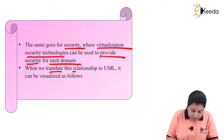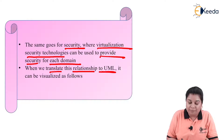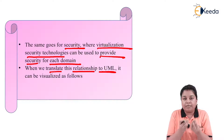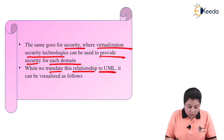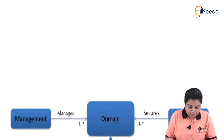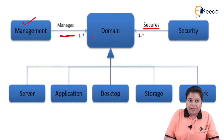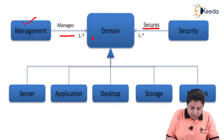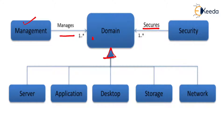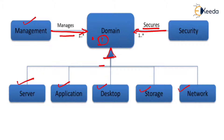When we translate this relationship to the UML taxonomy model, it can be visualized as follows. This is management — it manages the domain. The domains are: server, application, desktop, storage, and network. These all combine and form one domain, which is connected with management as well as security.